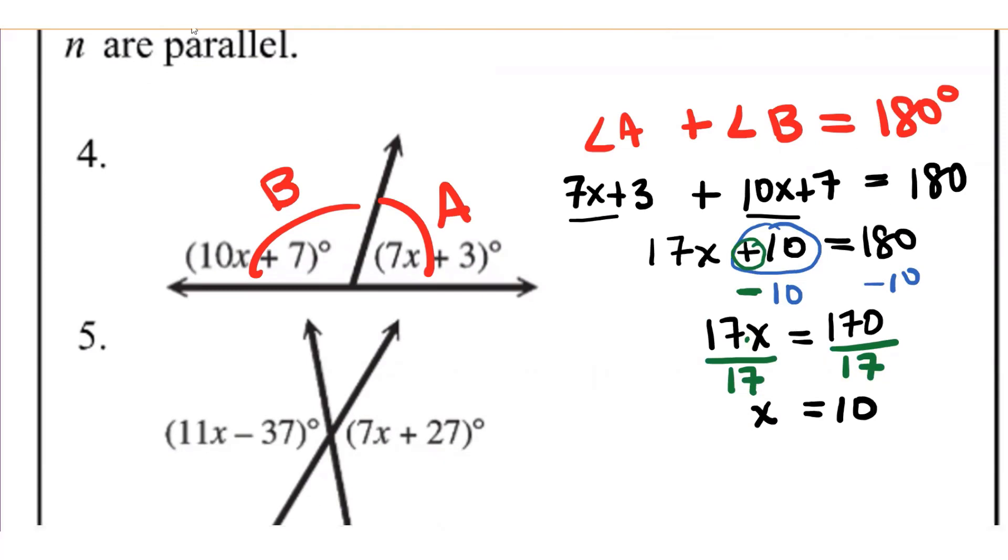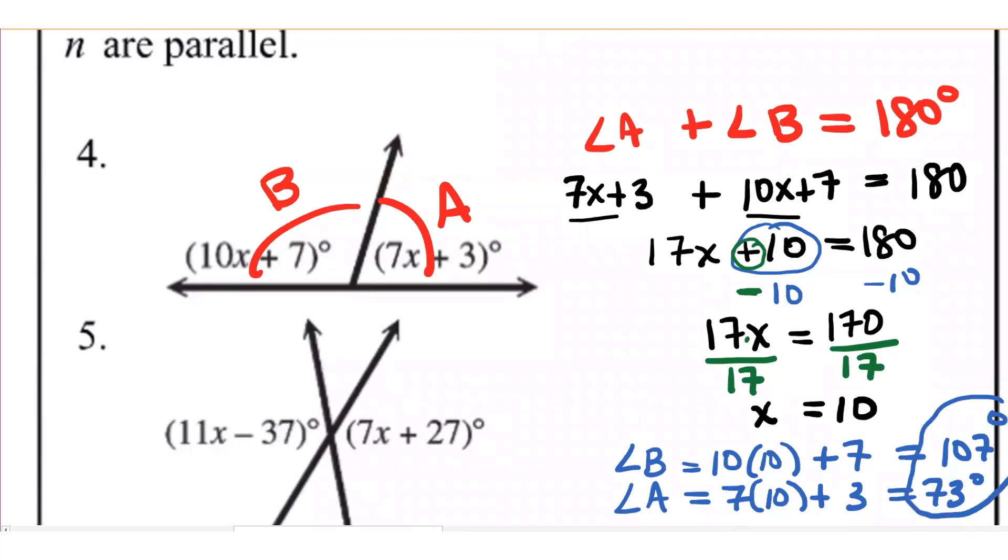So for example, in this case, angle B, what I'm calling angle B is 10 times x. So 10 times 10 plus 7, which is going to be 107 degrees. And angle A would be 7 times 10 plus 3. That's going to be 73 degrees. And what's a little mental check that you could do to just see if your answer makes sense. Add them up. What should they add up to? 180. And they do. So I'm pretty confident that I did the work correctly.